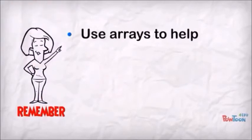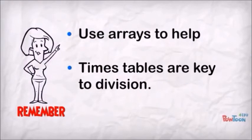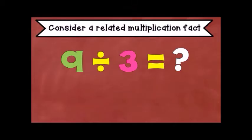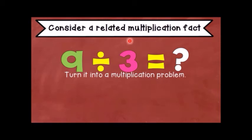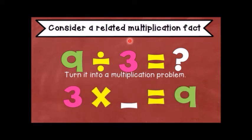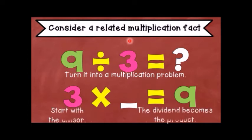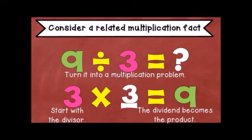I hope you can see how you can use an array to help you with division and use your times table knowledge too. What is 9 divided by 3? Think about a related multiplication fact and turn it into a multiplication problem: 3 times what number equals 9? The divisor becomes one of the factors, the dividend becomes the product, and the quotient is the unknown factor. 3 times 3 is equal to 9, so 9 divided by 3 is equal to 3.